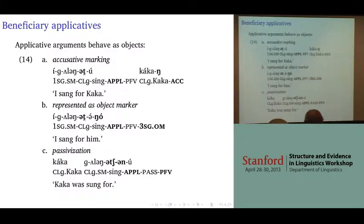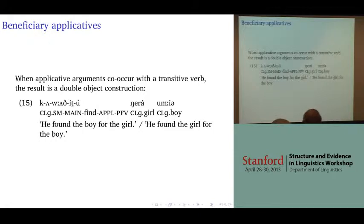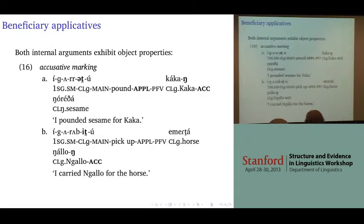In 14, we see all of the expected object behaviors on this applicative argument. In 15, if you add an applicative to a transitive verb, you end up with a ditransitive construction, and again we get the expected ambiguity: 'He found the boy for the girl' or 'He found the girl for the boy.' Both of those objects end up in the postverbal position, one after the other.